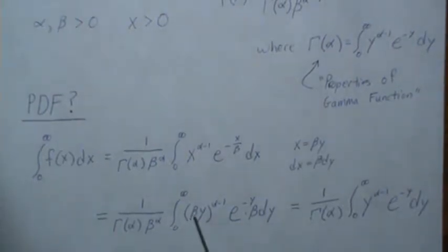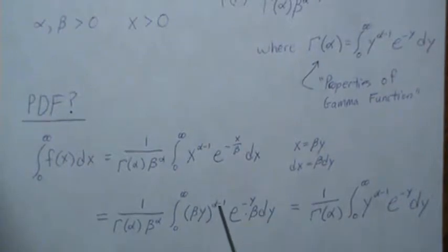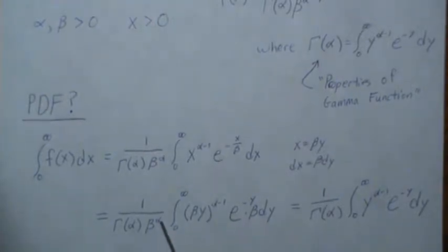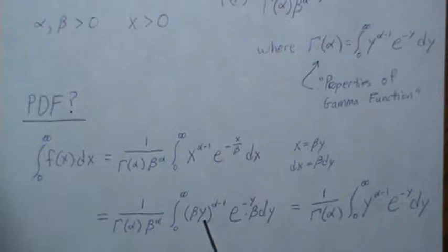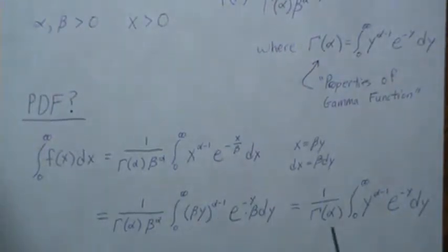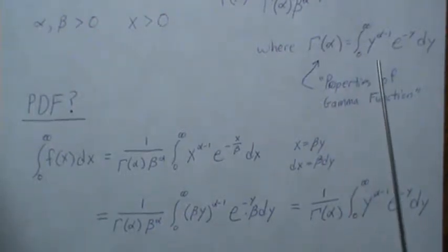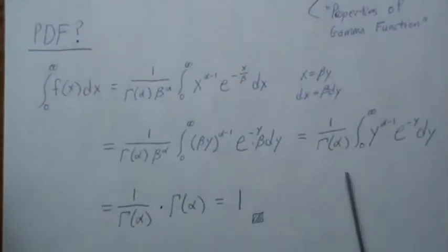Now when we look at this we have beta raised to the alpha minus 1 plus 1, so it's beta to the alpha. That cancels with this, and then we're left with Y raised to the alpha minus 1. This piece right here is how we define the gamma function.